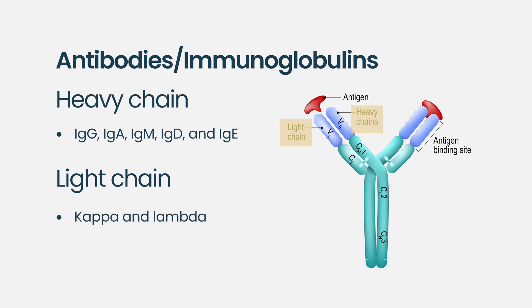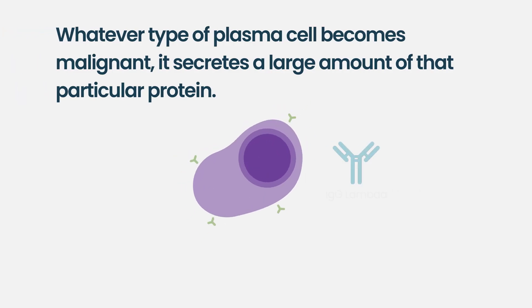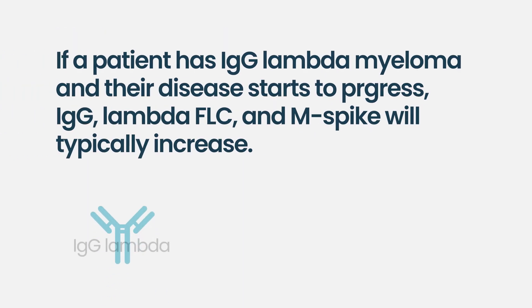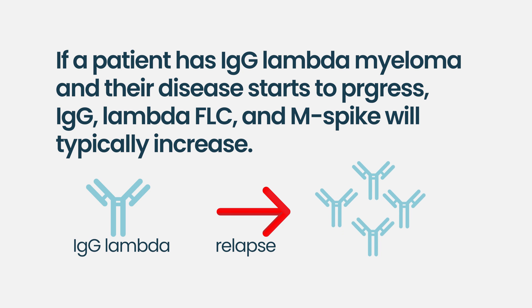Sometimes the plasma cells just make a light chain and no heavy chain at all — so you have free kappa or free lambda. Whatever type of plasma cell becomes malignant, it makes too much of that particular protein. It doesn't mean you do better or worse with any one of these — it's just that if you have IgG lambda, when your myeloma gets worse, your IgG will go up, your lambda will go up, and the M spike will go up.